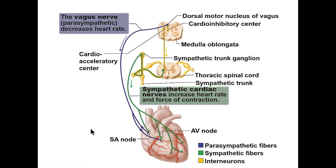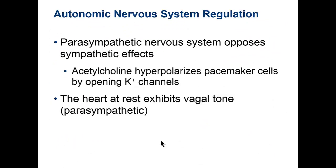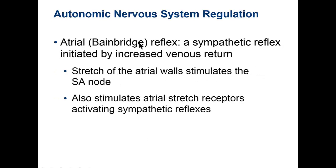The sympathetic nervous system speeds up heart rate by serving the nodes and increases contractility by serving the muscle, while the parasympathetic only serves the nodes and slows the heart rate down. There's also the Bainbridge reflex — when we have extra stretch of the atrial walls, that reflex acts right on the SA node to cause it to fire, because stretching atria means they're filling with blood and it's time to empty them.